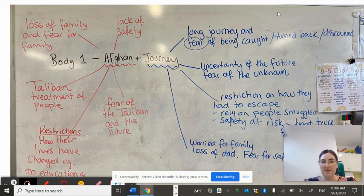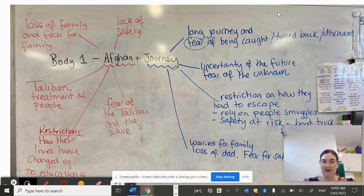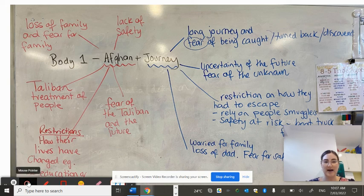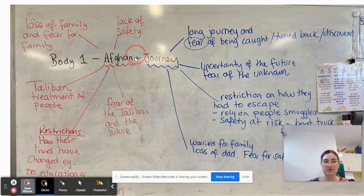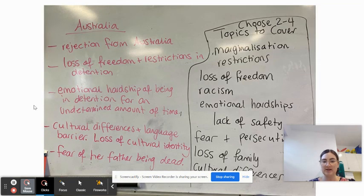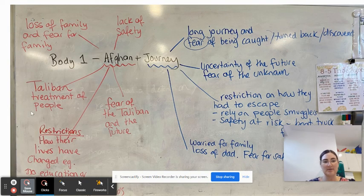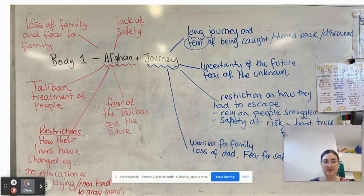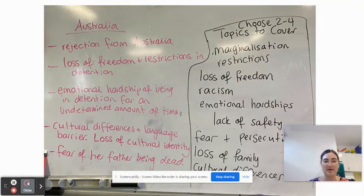Remember, a body paragraph is only 150 to 200 words, so you don't want to talk about absolutely everything. You want to be selective about what you think is most important and the best examples of marginalization. If you wanted to, you could start by talking about Afghanistan — Matab and her family's poor treatment by the Taliban and restrictions on how their lives are led. You could have a whole paragraph about that.